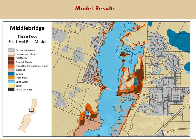At three feet of sea level rise, things get a little more dramatic. Some of these marshes are not keeping up — they're being inundated and becoming open water. There's some opportunity over here where you can see the marsh is moving upland, but there's nowhere for it to go in some of these areas. This form of freshwater wetland has become inundated and is converted to a saltwater marsh.